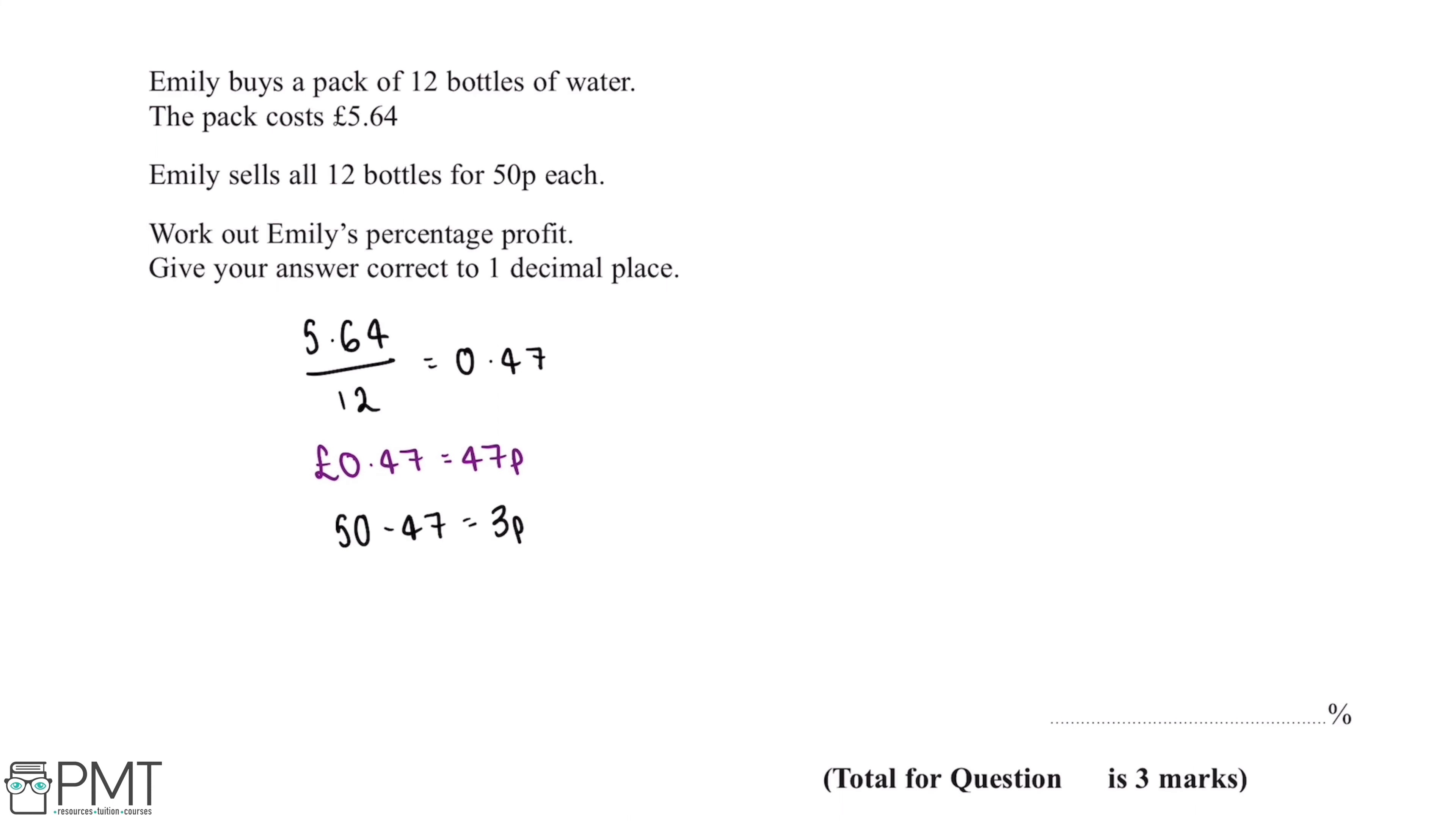So in order to work out Emily's percentage profit, we can do the amount of profit she made from each water bottle divided by the original cost of the water bottle, which is 3 divided by 47. And this will give us an answer of 0.0638 to three significant figures.